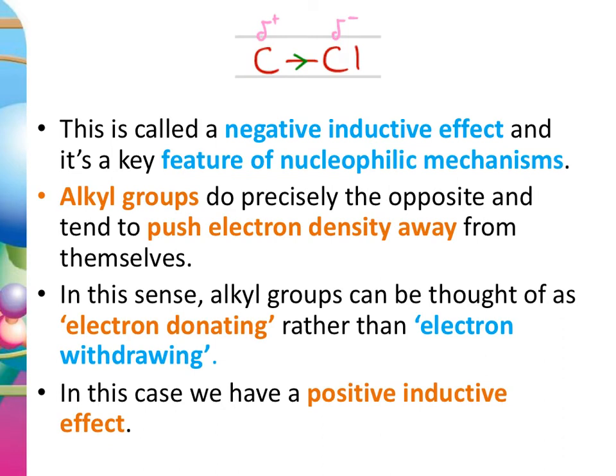In our carbon–halogen bond, this is an example of the negative inductive effect. It was a key feature in the reactivity of haloalkanes, because the delta-positive carbon meant that a nucleophile — an electron-pair donor — was attracted to that carbon. That caused the breaking of the carbon–halogen bond and produced the nucleophilic substitution reaction.